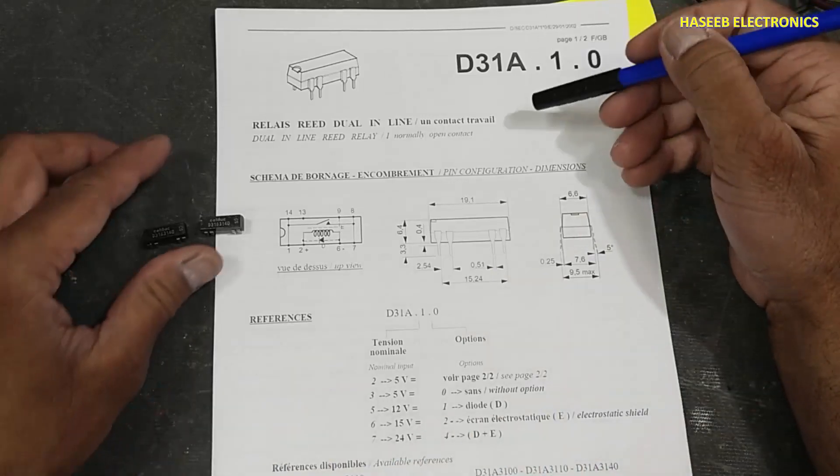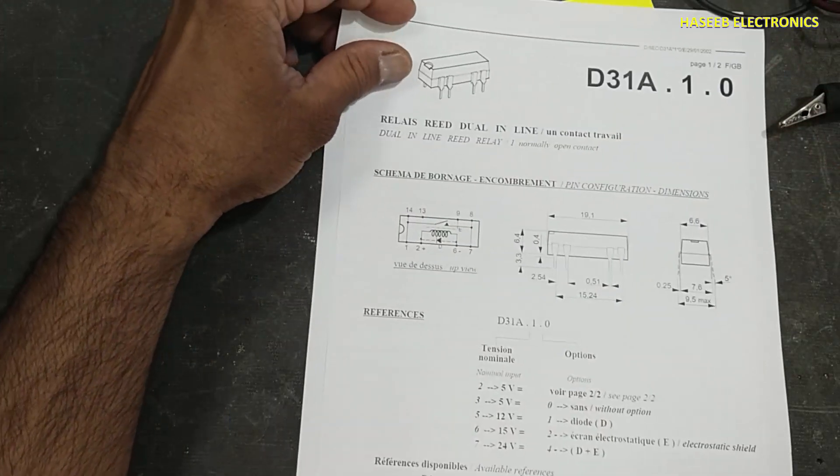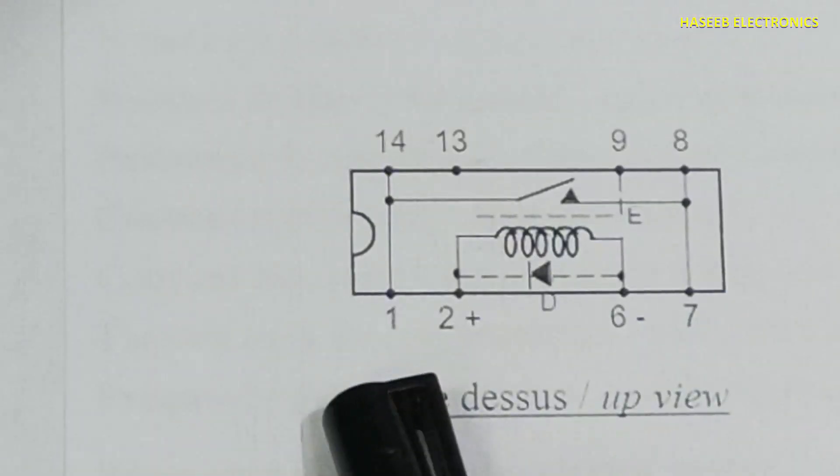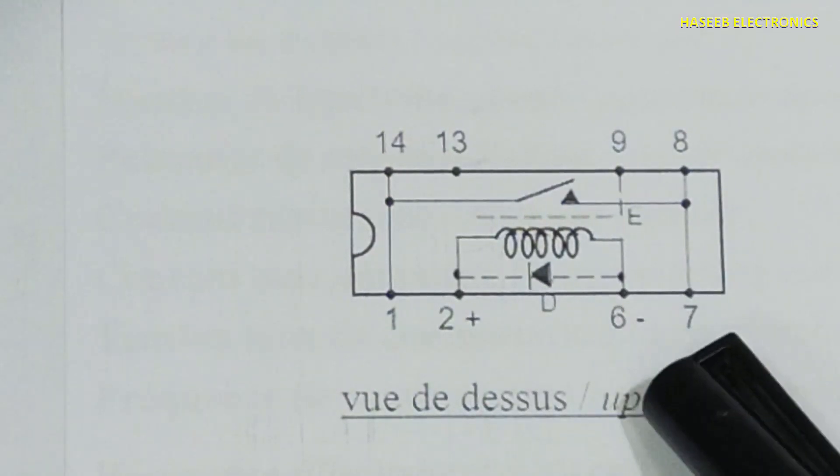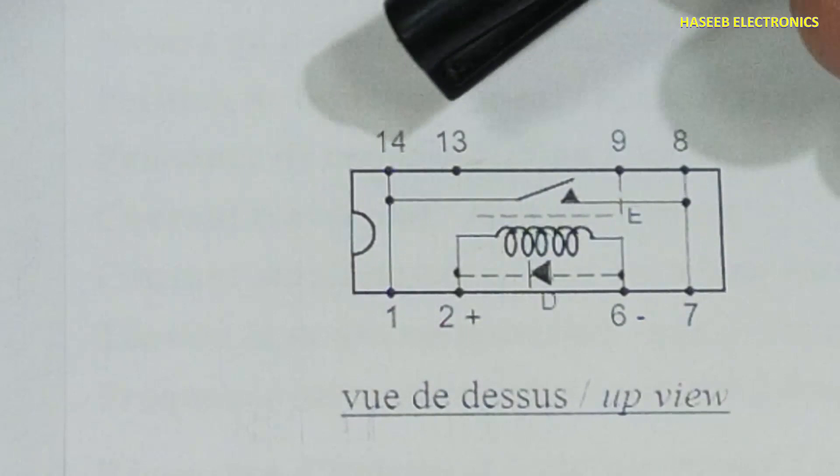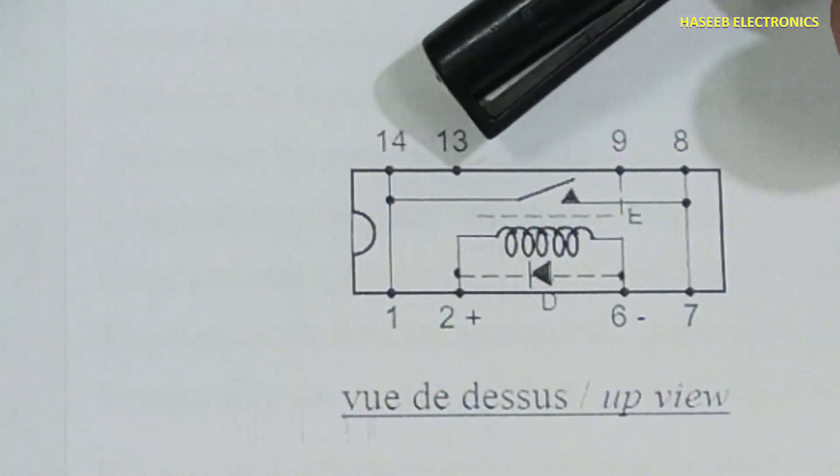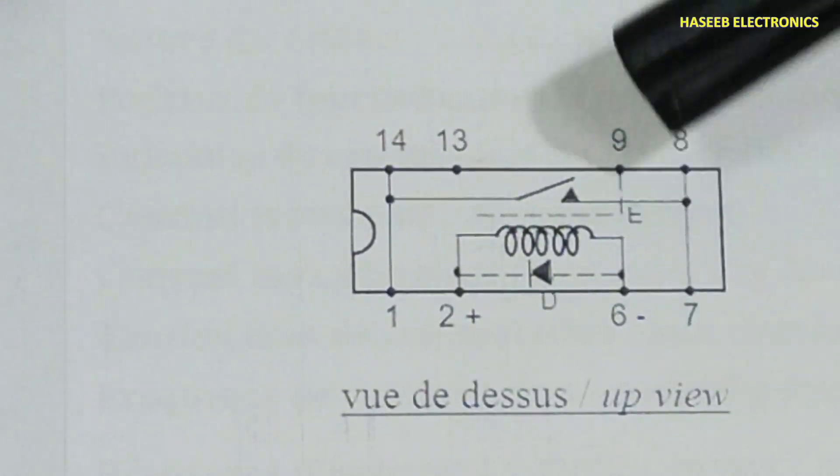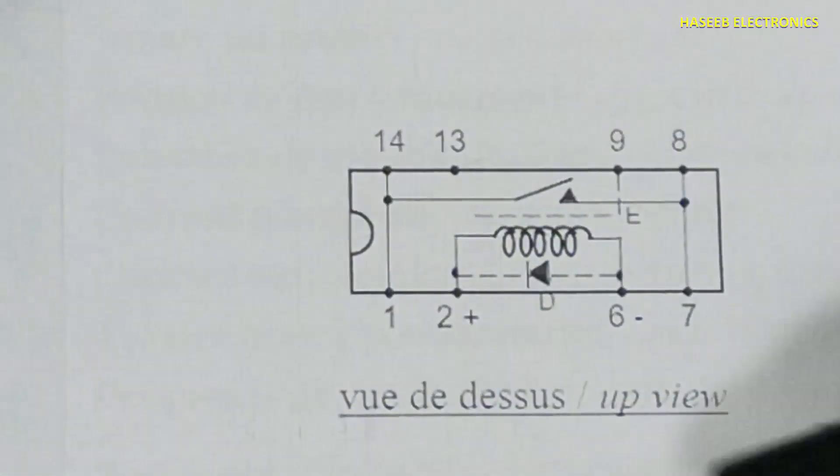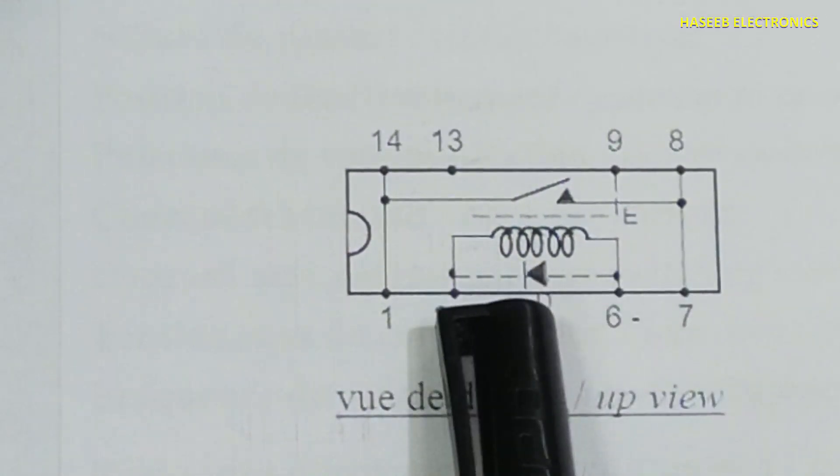The D31A 3140, if you see its pinout, is a 14-pin package. Pins 1, 2, 3, and 4 are available. Pin 5 is not available, then 6, 7, 8, 9, 13, 14. Pins 9 and 13 are blank. Pins 7 and 8 are connected together. Pins 1 and 14 are connected together. We apply excitation voltage to this winding at pins 2 and 6.